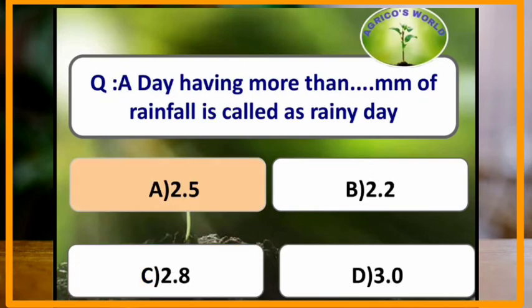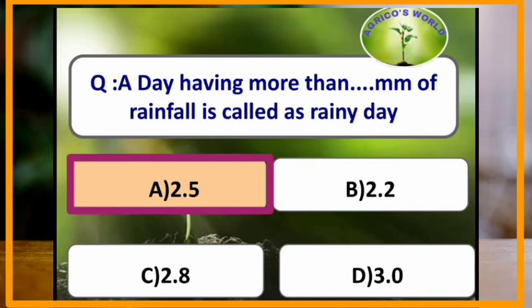A day having more than how many mm of rainfall is called a rainy day? A day having more than 2.5 mm of rainfall is called a rainy day.